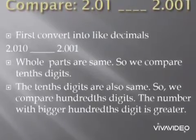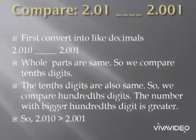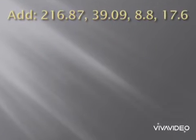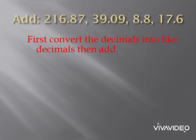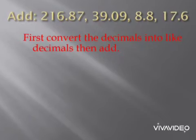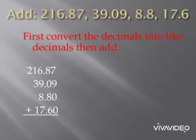So 2.010 is greater than 2.001, therefore 2.01 is greater than 2.001. Next, add 216.87, 39.09, 8.8, and 17.6. First, convert the decimals into like decimals, then add. Write the addends one below the other so that the decimal points of all the addends are in the same column.